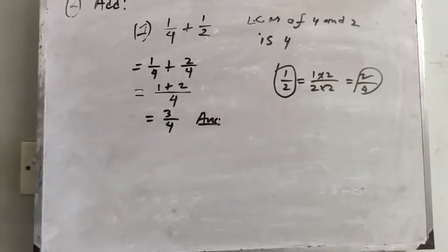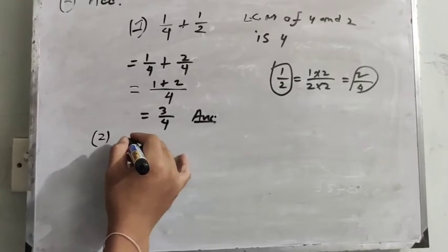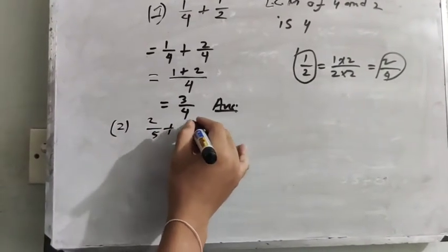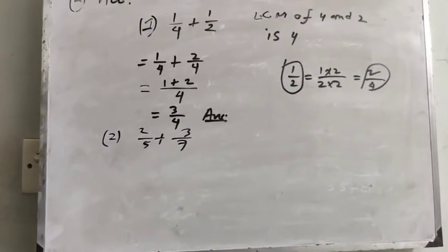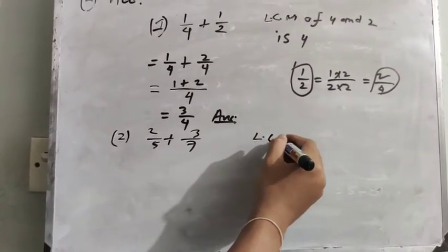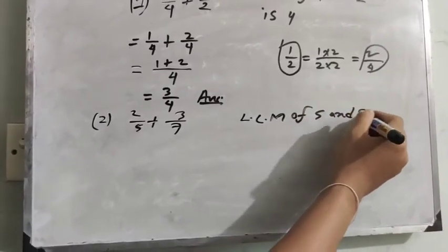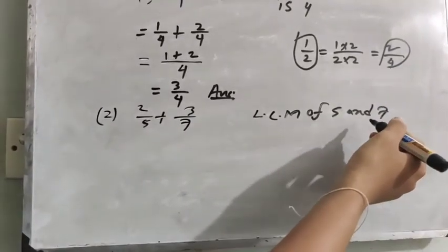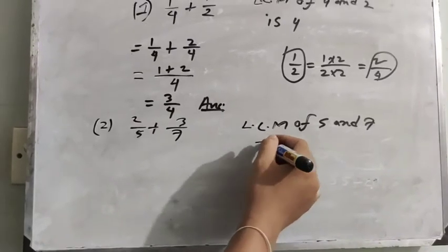Question number 2 is given here. The first fraction is 2/5 plus 3/7. We have to find the addition of the fractions. The LCM of 5 and 7 — the least common multiple of 5 and 7 — is 35.